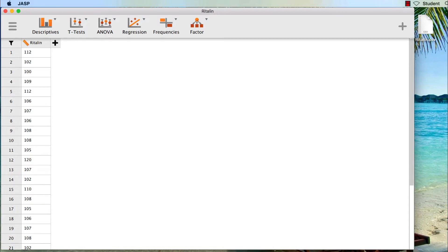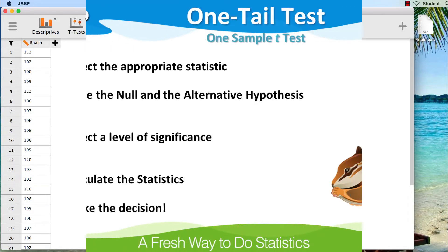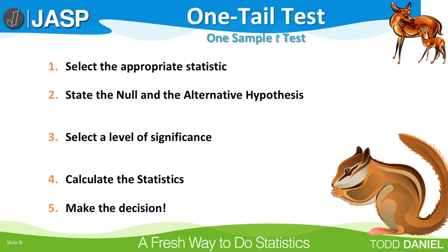But first, let's walk through the five steps of hypothesis testing so that we know what we are doing with this test. Step one: select the appropriate statistic. We will use a one-sample t-test looking only to the upper or right direction.